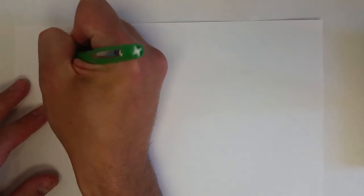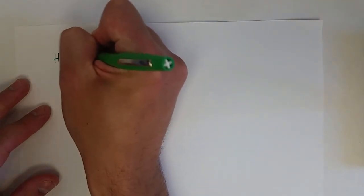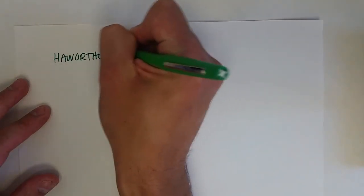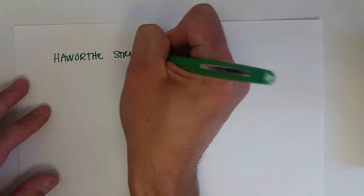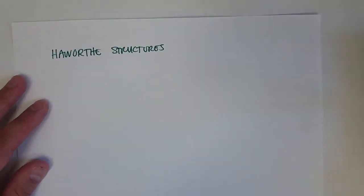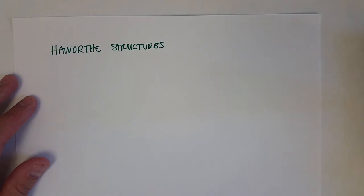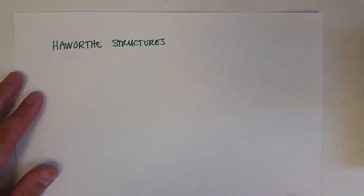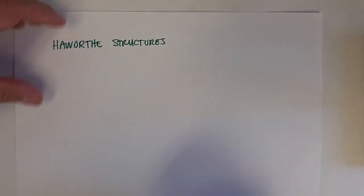If we think about this happening for the D-glucose, it will form a cyclical structure of the D-glucose, and it turns out that we call these Haworth structures—well, Haworth formulas, really—and there are two different forms for glucose.